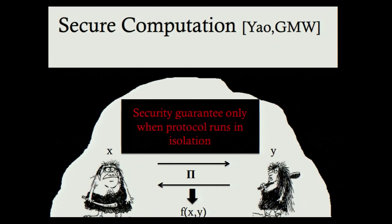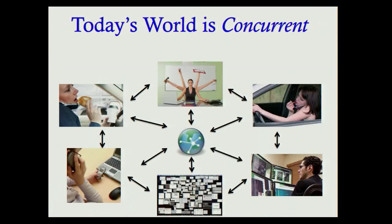The security guarantees we began studying were for a world where there's only one thing happening: we run protocol pi and ask, is this protocol secure? On the other hand, today things are very different.